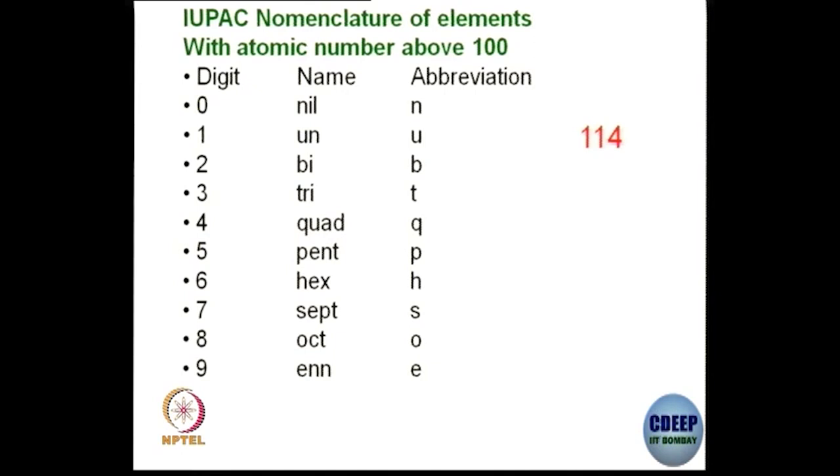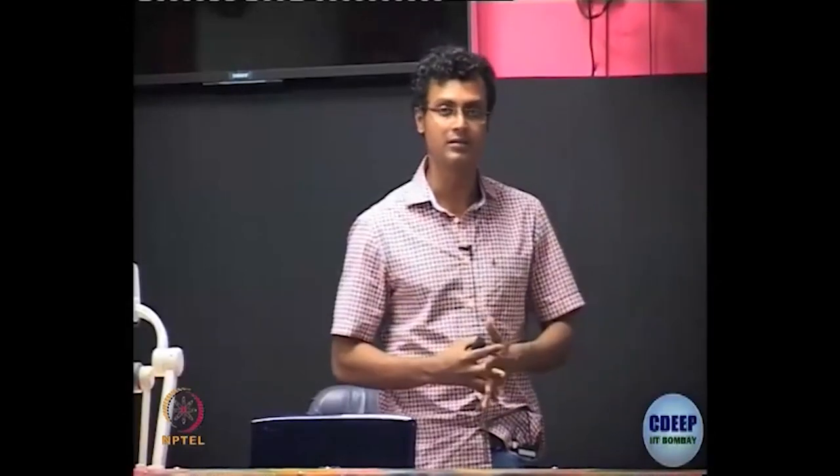A lot of new elements are getting discovered. If an element with atomic number 114 is discovered, what will be its nomenclature? The nomenclature for earlier elements is already done — we do not have to worry about hydrogen, helium, lithium, beryllium, carbon, nitrogen, and so on. But if a new element with atomic number more than 100 or 105 is discovered, what would be the IUPAC way to name it?